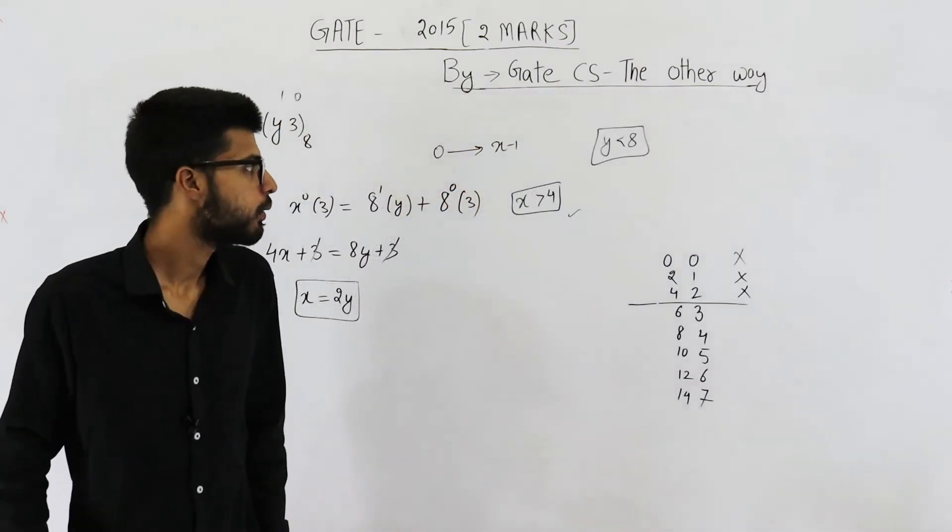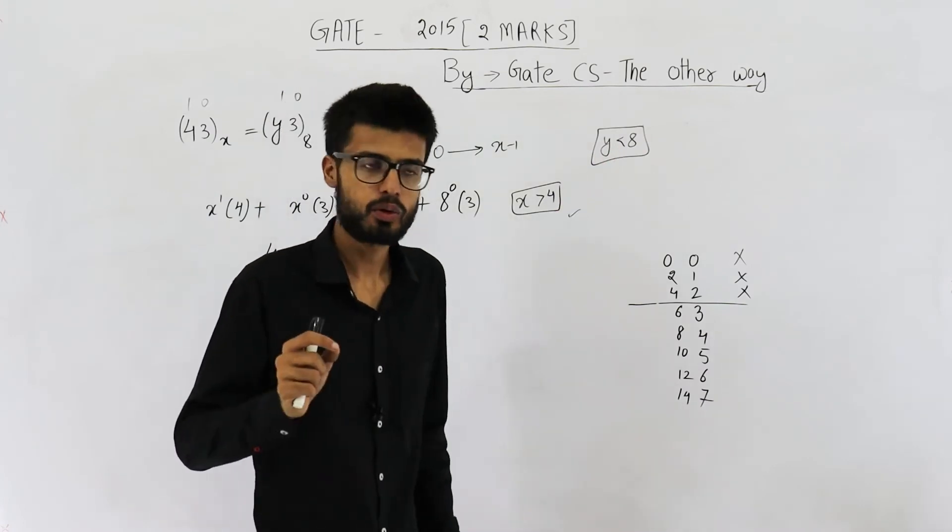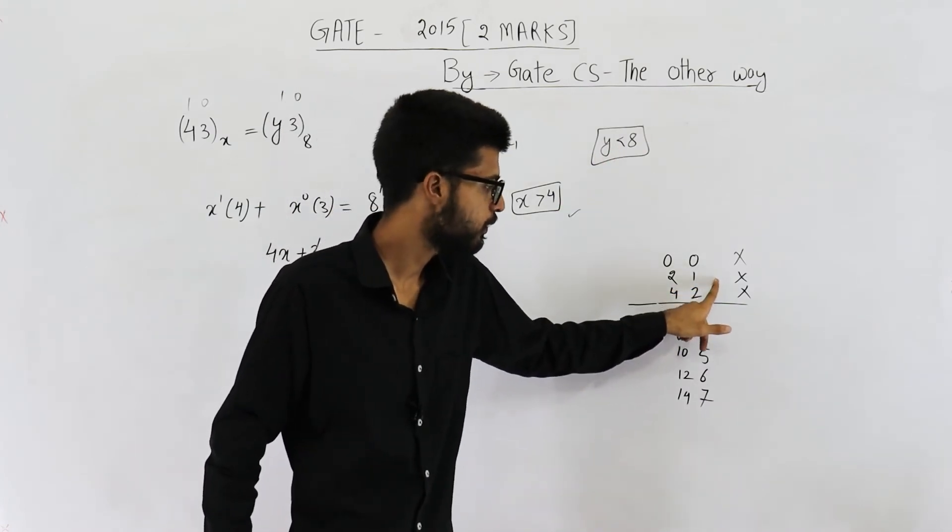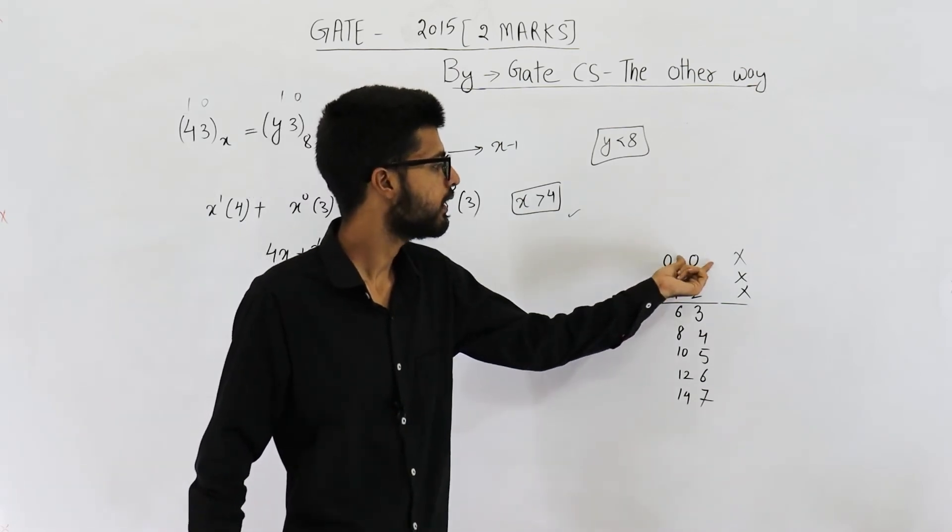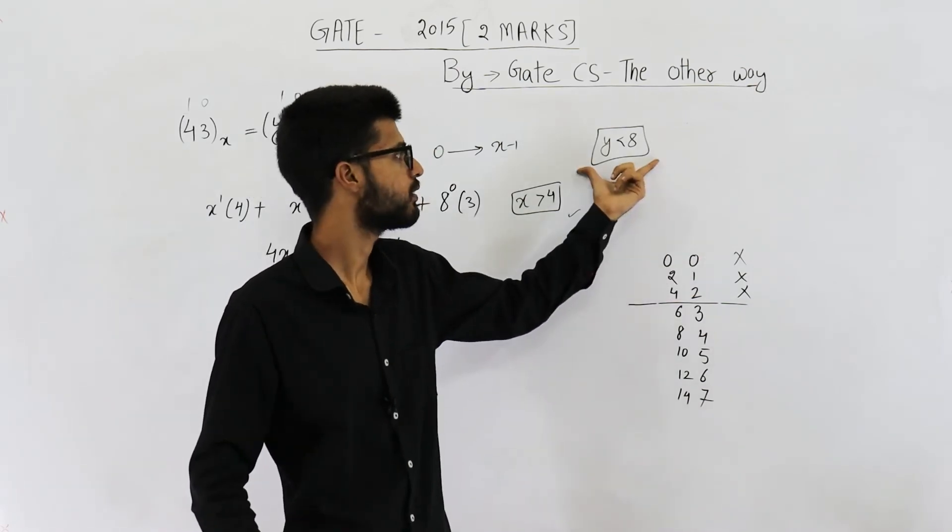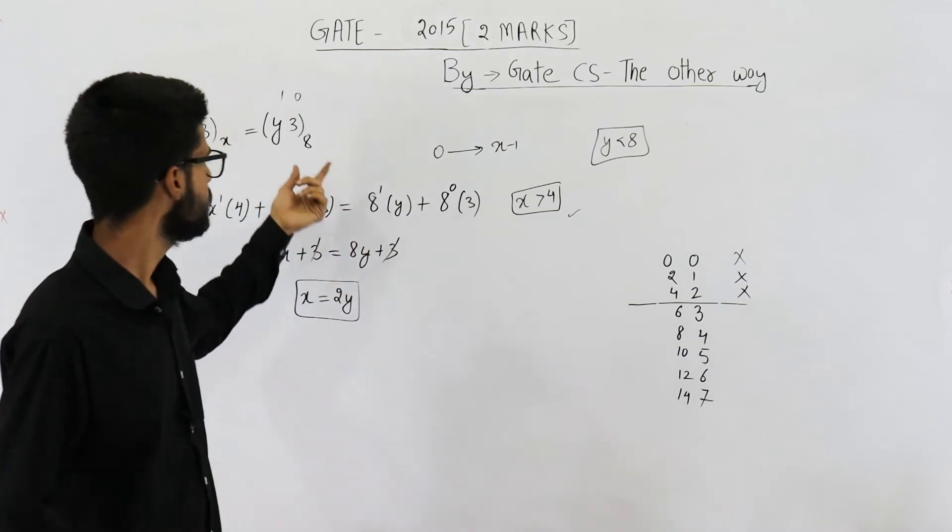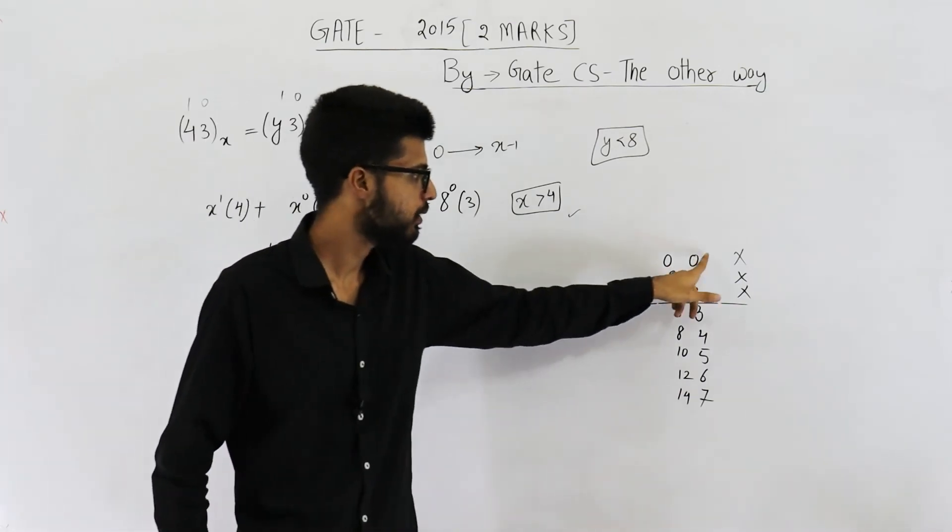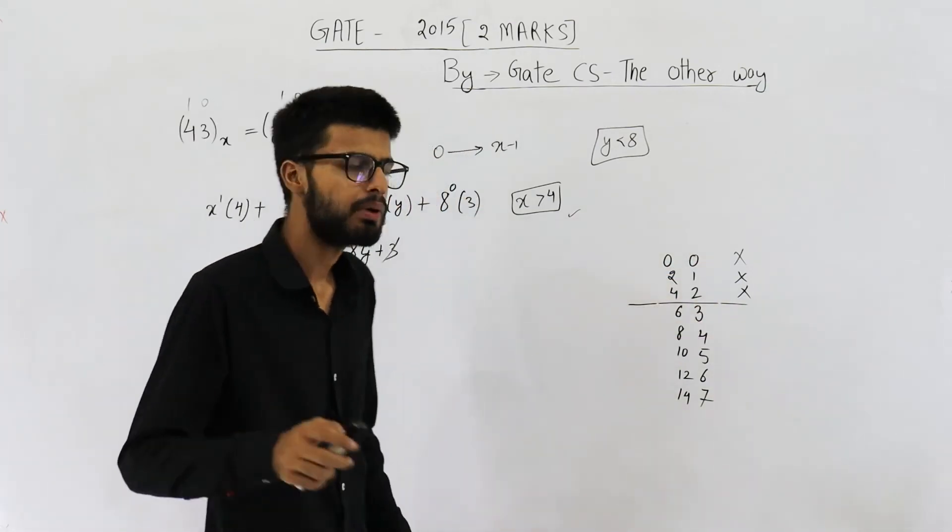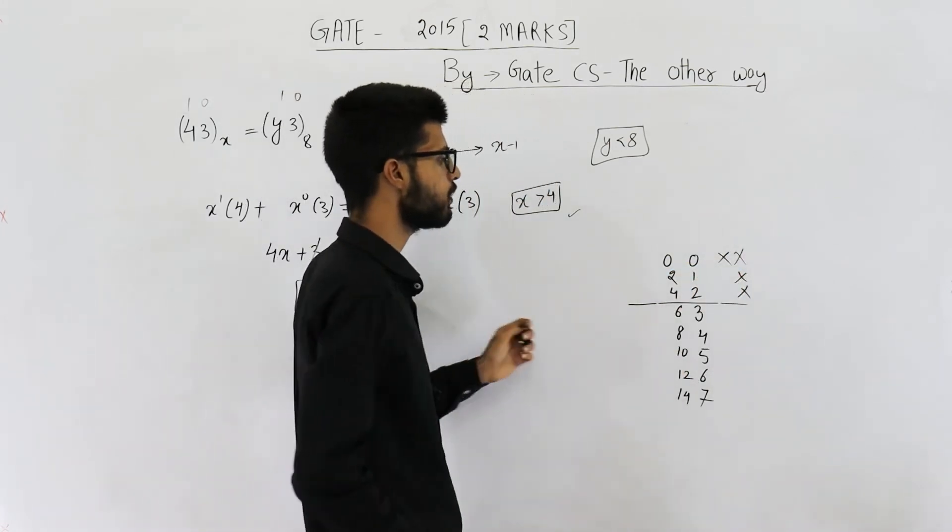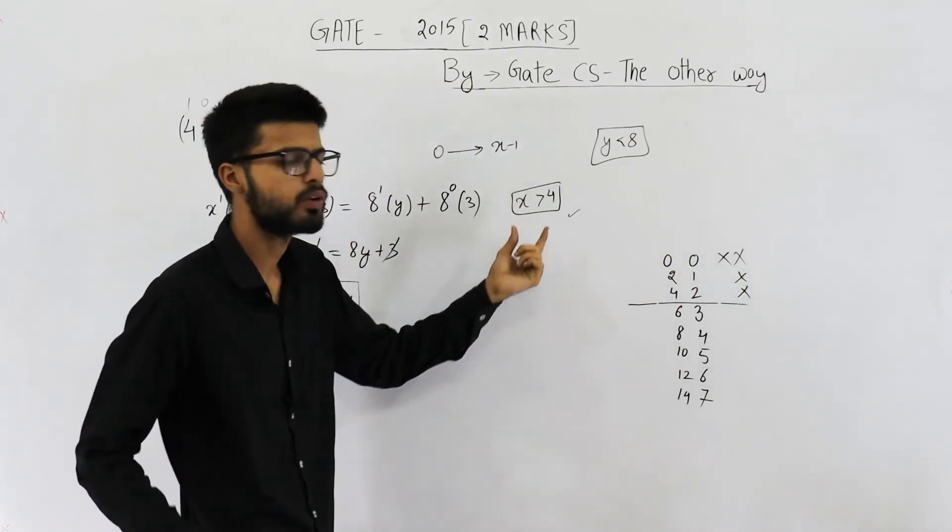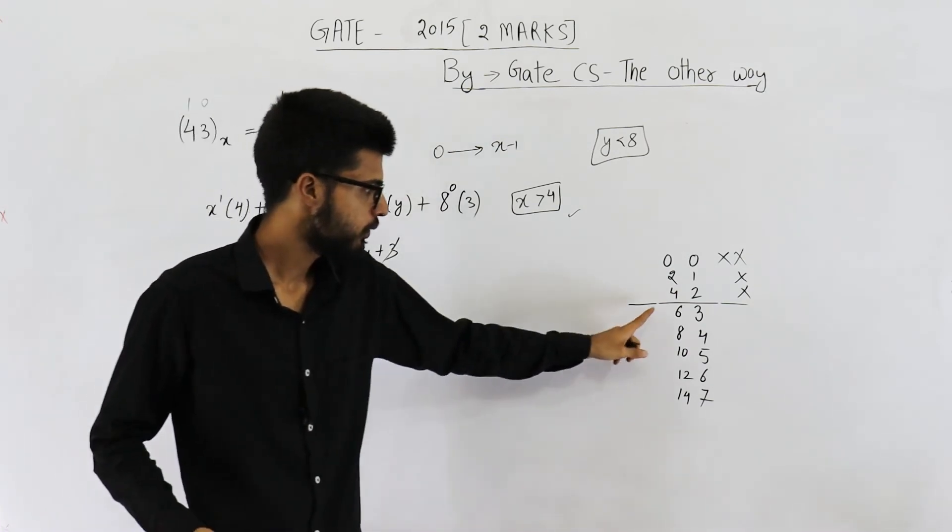Yeah, one more point, y can take a value 0 also. I told you possible values are from 1 to 7, but I missed this 0. y can take a value of 0 according to this equation, because it is an octal number system. So possible values are from 0 to 7. But anyways, this combination is going to be rejected because for this also, x is not greater than 4. So you have 5 solutions.